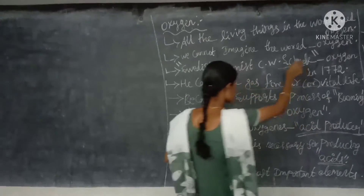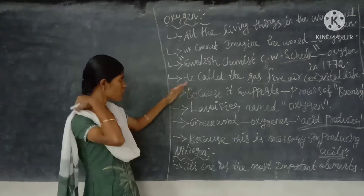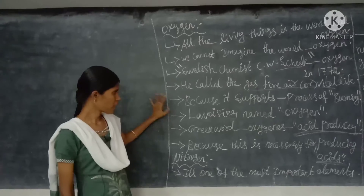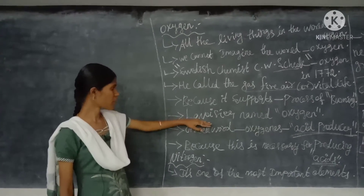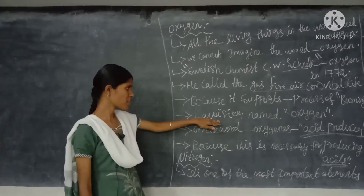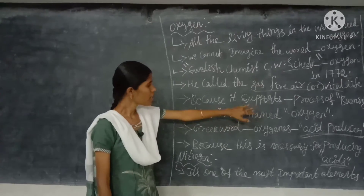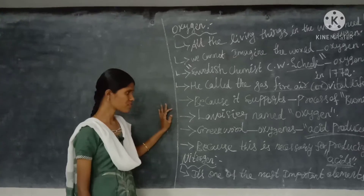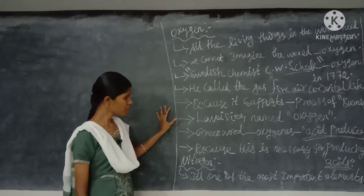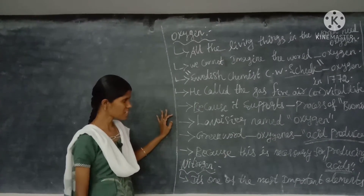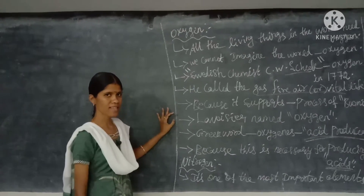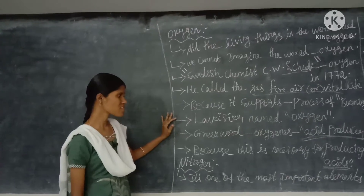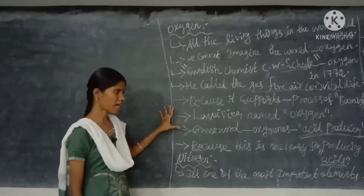C.W. Scheele belonged to Sweden. After that, the gas was named oxygen. Oxygen is a Greek word — 'oxygenous' — which means 'acid producer,' because oxygen is very necessary for producing acids.